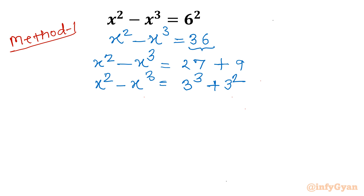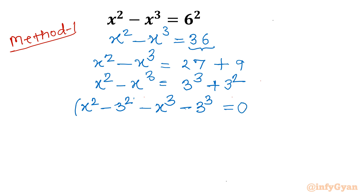Now let us bring all terms to the left-hand side. I will write x squared minus 3 squared, then minus x cubed minus 3 cubed, and the right-hand side becomes 0. Now if you look at this, we have a difference of two squares and a sum of two cubes — both involving x and 3.